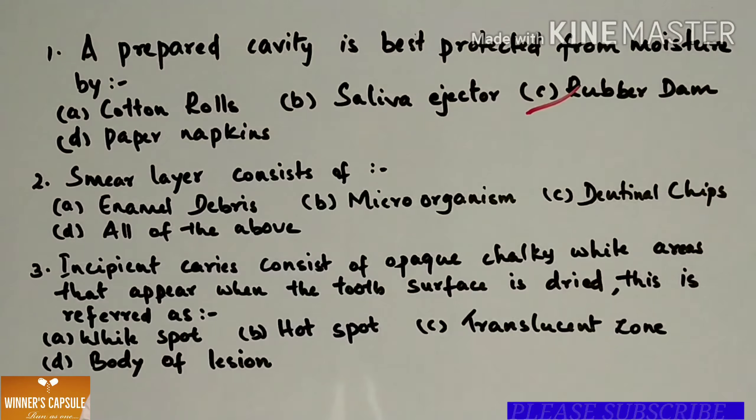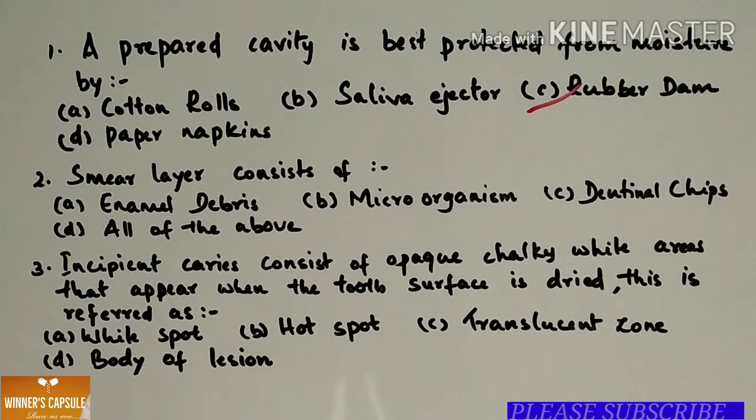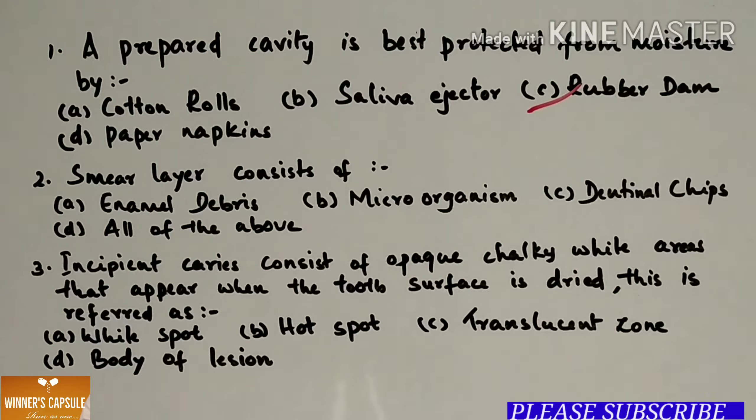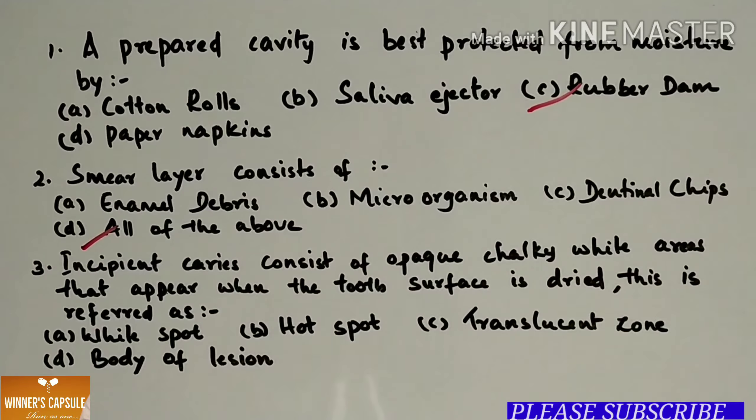Among cotton roll, saliva ejector, rubber dam, and paper napkins, the best recommended for moisture control is rubber dam. Second one: Smear layer consists of (a) Enamel debris (b) Microorganism (c) Dentinal chips and (d) All of the above. Answer is D, all of the above.